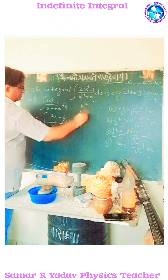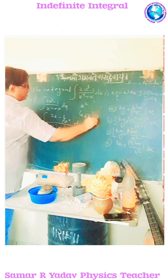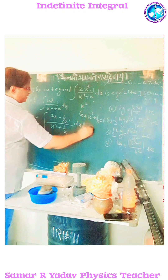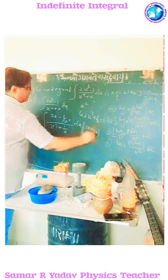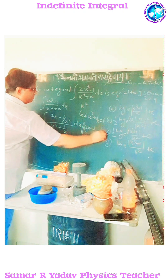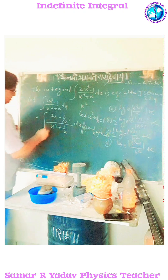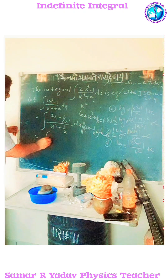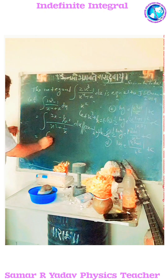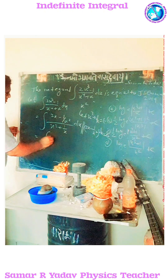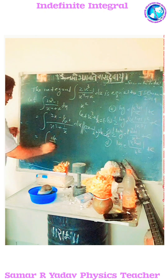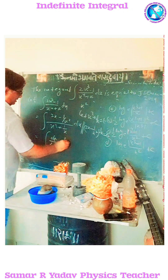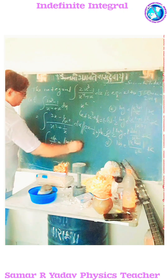Let t = x² + 1/x. Therefore, differentiating gives (2x - 1/x²) dx = dt. Substituting this value, we get ∫ dt/t.